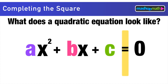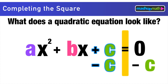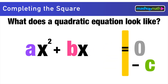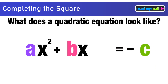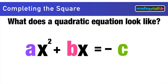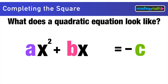We can tweak this equation and move things around the equal sign. For instance, subtracting c to the other side results in ax² + bx = -c, which is still a form of a quadratic equation, just in a rearranged order.